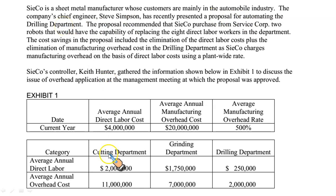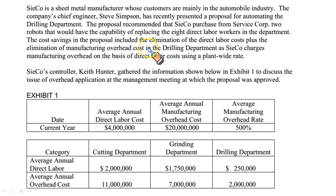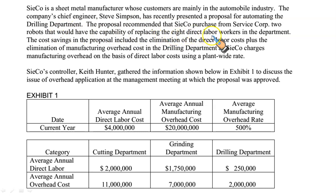We have three departments: cutting, grinding, and drilling. This is the department being considered for automation. The proposal recommended that SECO purchase from Service Corp two robots that would have the capability of replacing the eight direct labor workers in the department.